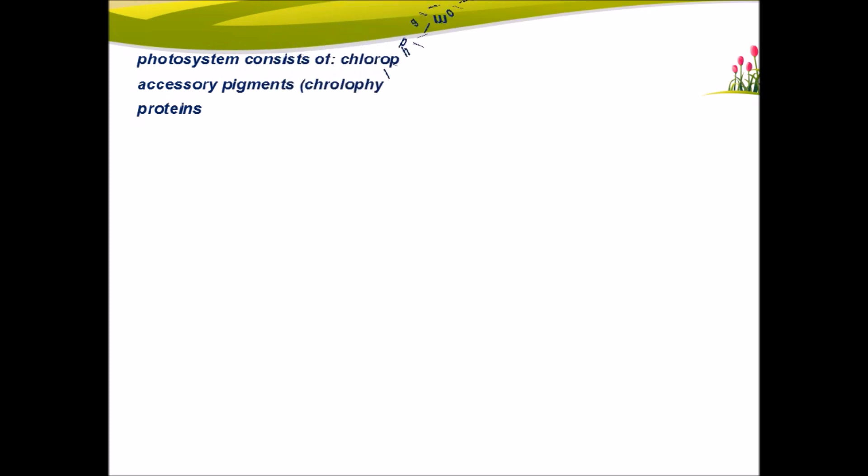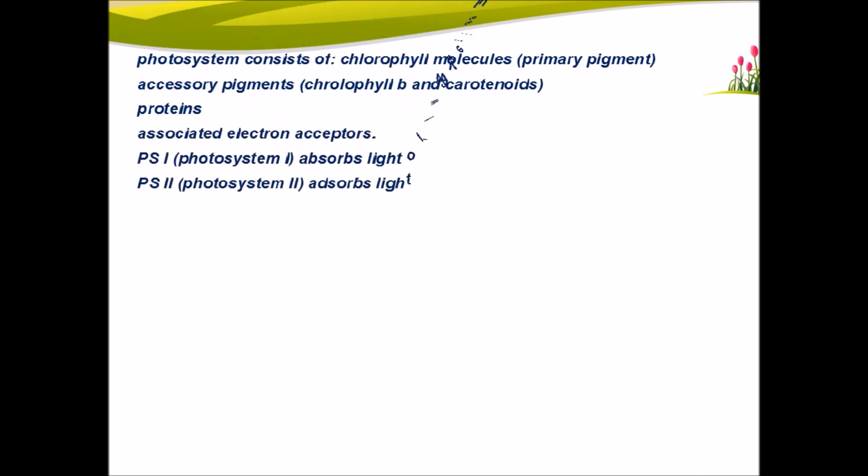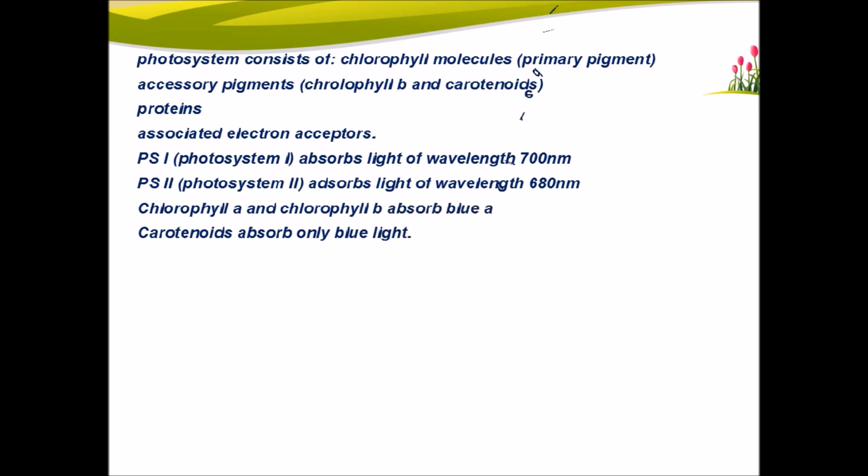Photosystem consists of chlorophyll molecules as primary pigments and accessory pigments chlorophyll B and carotenoids. The proteins associated are electron acceptors. PS1, photosystem 1, absorbs light of wavelength 700nm and photosystem 2 absorbs light of 680nm. Chlorophyll A and chlorophyll B absorb blue and red light.